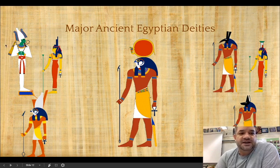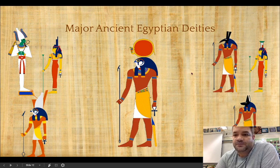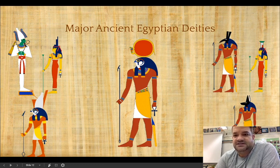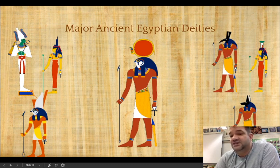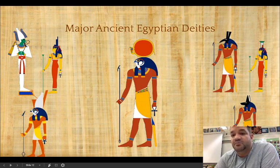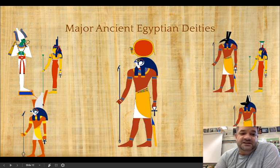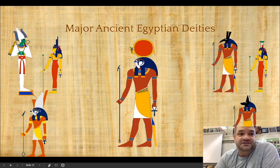We have Osiris, one-time king of Egypt and now lord of the dead. We have his wife and sister Isis, their brother Seth, and Seth's wife and sister Nephthys. These four - Osiris, Isis, Seth, and Nephthys - are all siblings. Osiris was the god of agriculture, Isis the goddess of magic, Seth the god of the desert and chaos, and Nephthys the goddess of the night. Their son is Anubis, the jackal-headed god of embalming. Osiris and Isis have a son, Horus, who becomes king of Egypt after Osiris.